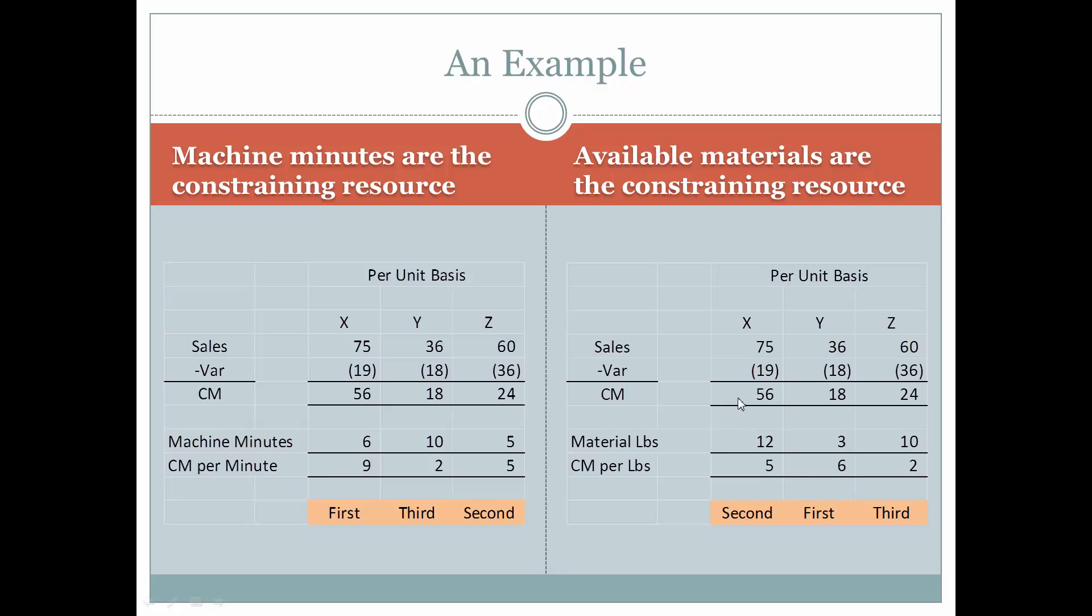So we're going to take the contribution margin divided by the number of pounds that we need of this material. And the material is needed for X, Y, and Z. So the material is common to all three products. So we're going to take the contribution margin divided by the material pounds needed. And the contribution margin per pound based on this constraining resource is going to be $5 for X, $6 for Y, and $2 for Z.